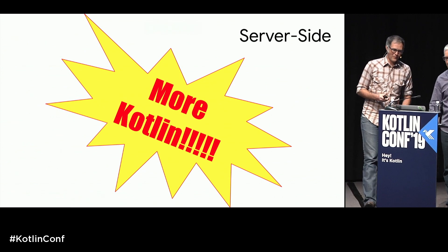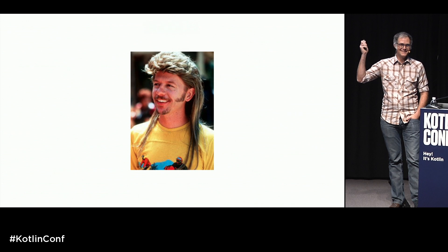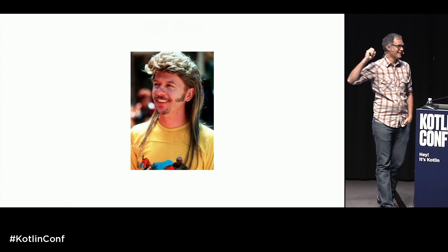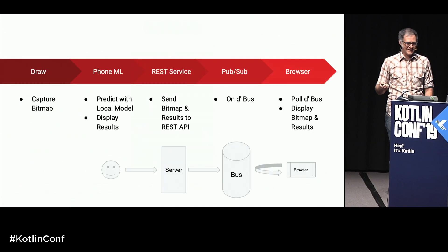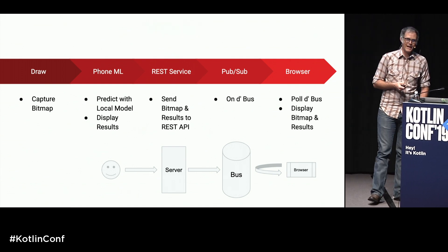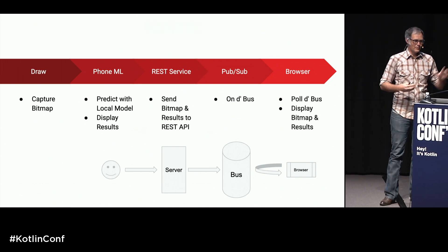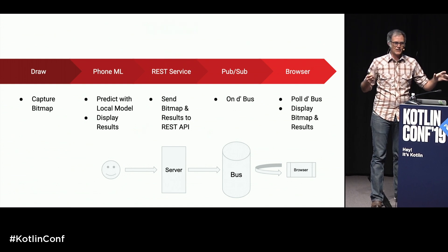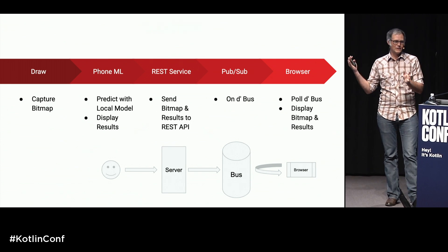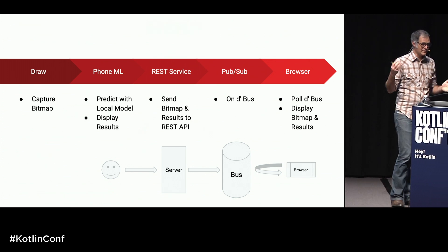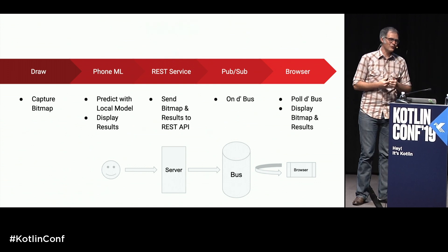We've been talking about the front end. A mullet is about business in the front and party in the back — so now we get to the party in the back with the server side. Those wonderful drawings from Chet — he wants to share them with the world. The process: take the bitmap captured from the device, do the prediction, get the results, send that up to a REST service, put it on a message bus, pull the bus, and display those results in the browser.